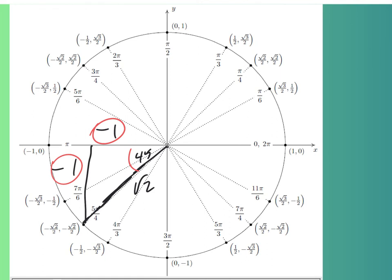Sine of 5 pi over 4: opposite over hypotenuse is negative 1 over root 2. Remember, don't freak out if you see root 2 over 2 — it's the same thing, just rationalized. This is day one of circle trig. It's an important unit, but you don't have to know it all today.